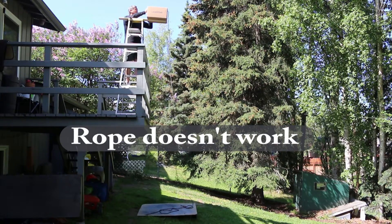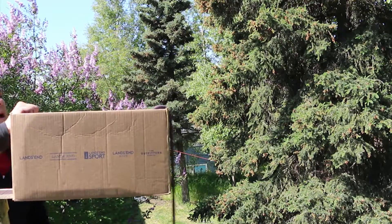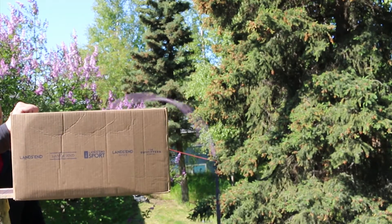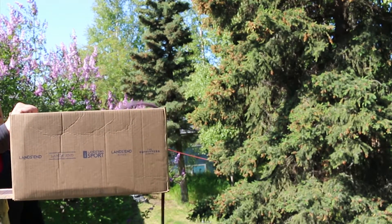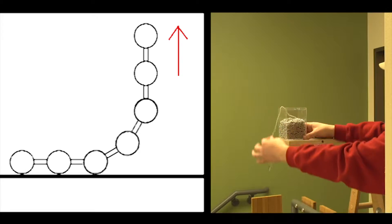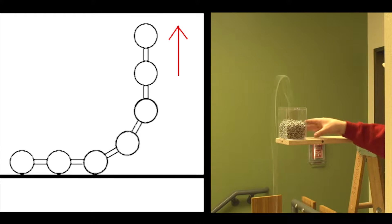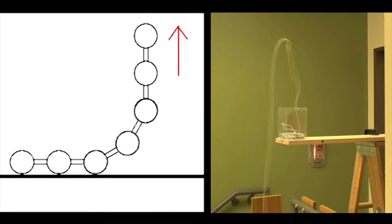Here is a repeat of the chain fountain experiment, but with a rope. Notice that the rope does not rise up above the container's edge. This is because the rope does not have links. The individual links in the chain are crucial for the fountain effect to occur.